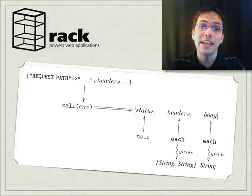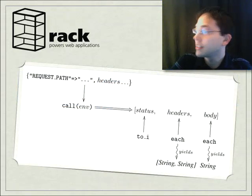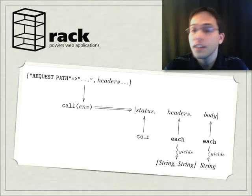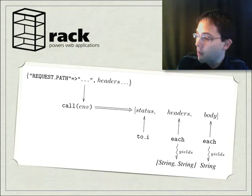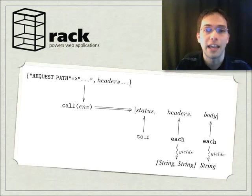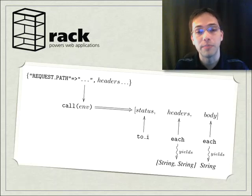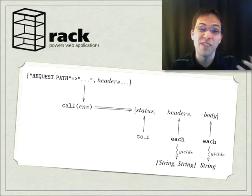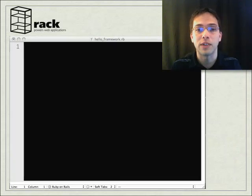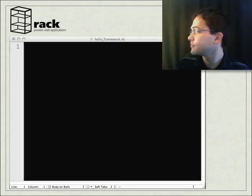The basic anatomy of a Rack application looks something like this. This is saying that we need to declare a call method, which returns status, headers, and body. Now we're going to look at a quick screencast which will show us a very basic Rack application.